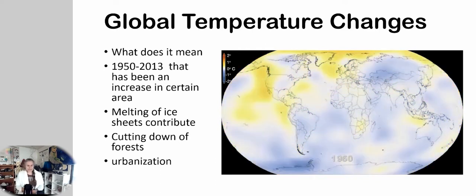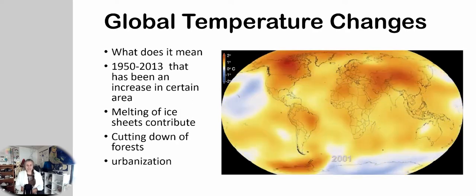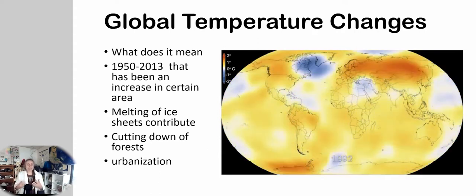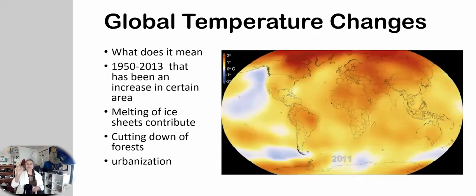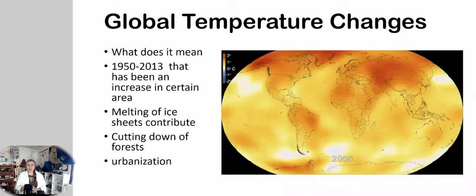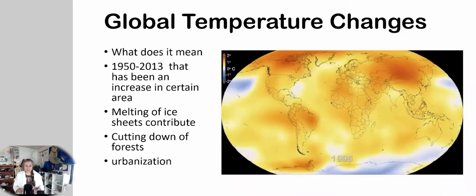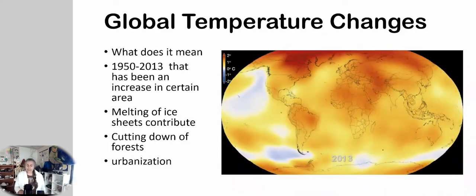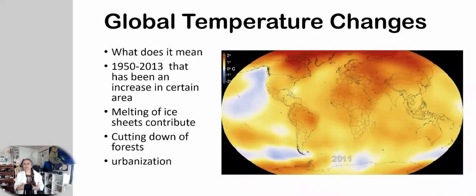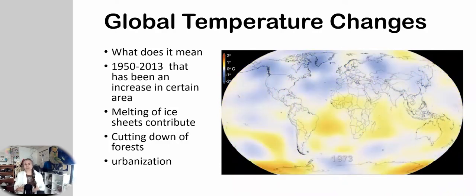Global temperature changes from 1950 to 2013 show colors changing — heavier colors mean we've had global increases in temperature since 1950, just a little, but enough to cause melting of our poles and changing weather cycles. Do humans play a part? Yes — the Industrial Revolution, how we use our resources, and what goes into the air all matter. Urbanization — the growth of cities — also causes problems.